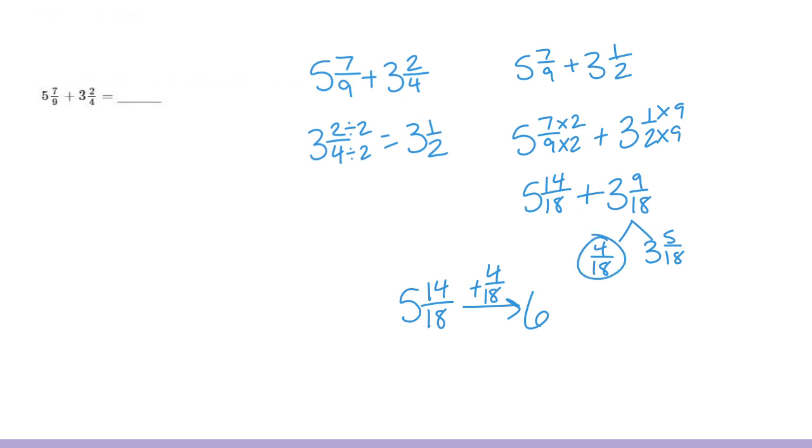That took care of this one right here. Now, I would just need to jump 3 to get to 9 and then I could jump 5 eighteenths to get to 9 and 5 eighteenths. If you remember, on the last problem, I got 9 and 10 thirty-sixths, which is equivalent to the sum I just got.